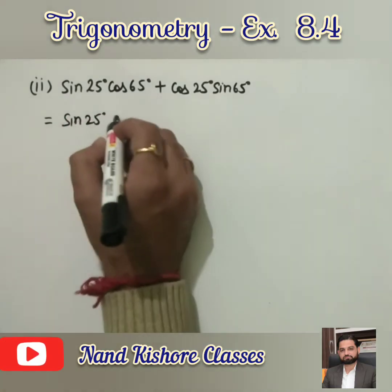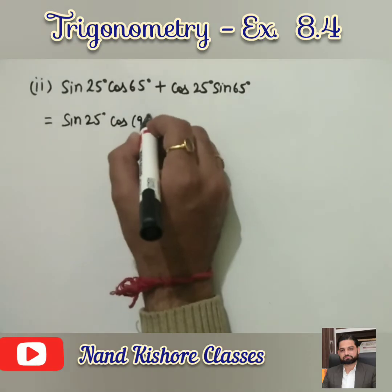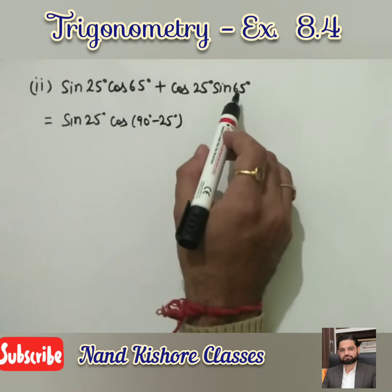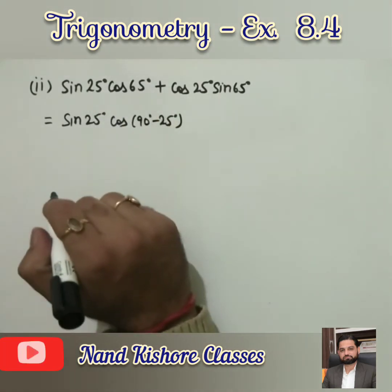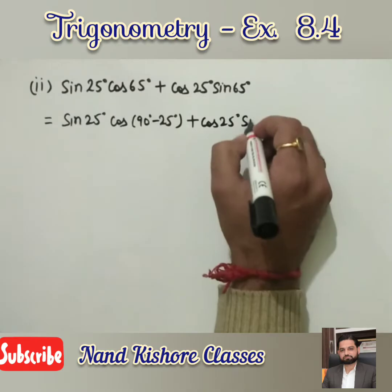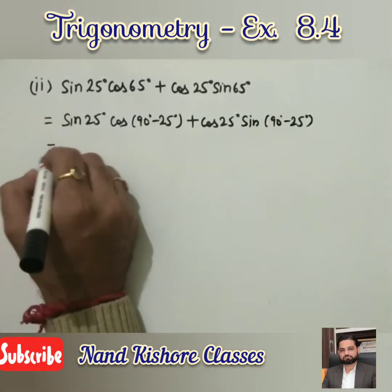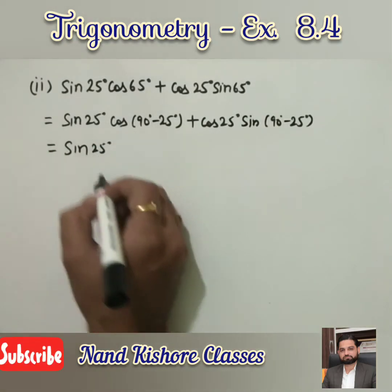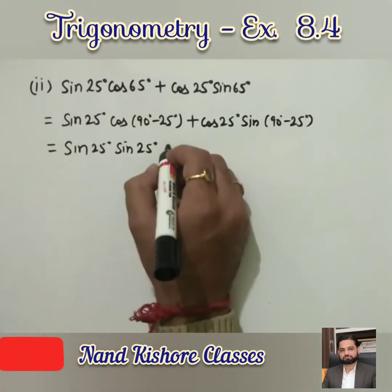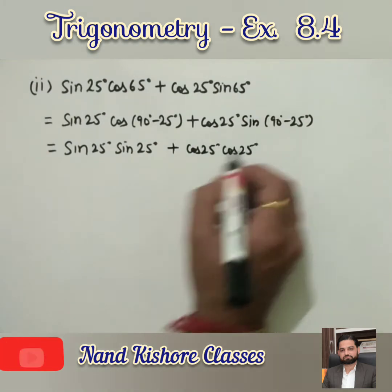sin25° stays as it is; I write cos65° and this 65 can be written as 90 − 25. I am planning to convert 65° into 25° on both sides. Then cos25° stays as it is, and 65° = 90 − 25°. So cos(90 − θ) = sinθ gives us sin25°, and sin(90 − θ) = cosθ gives us cos25°.